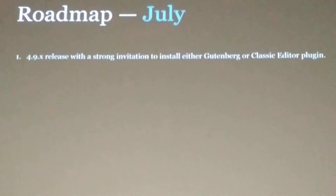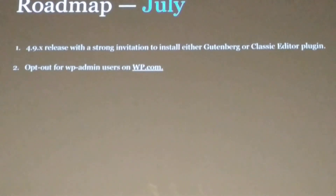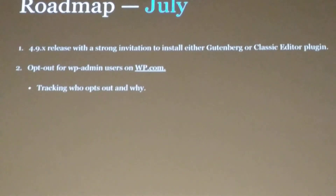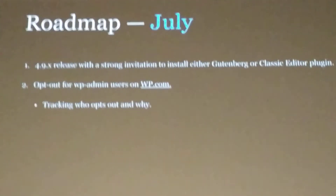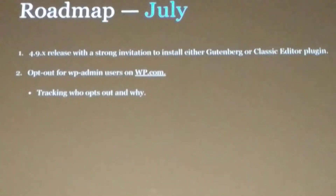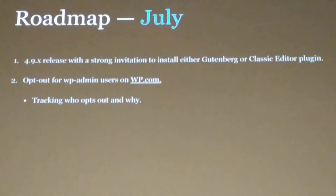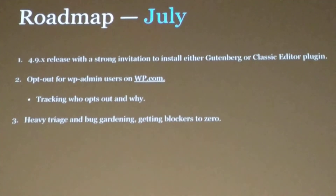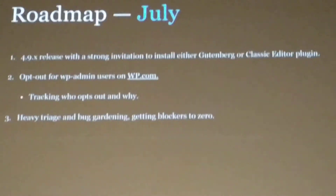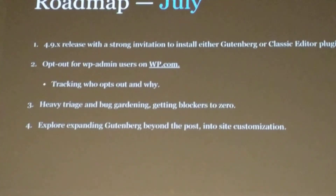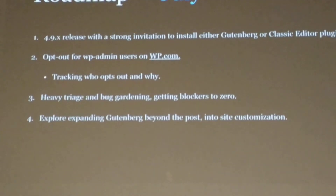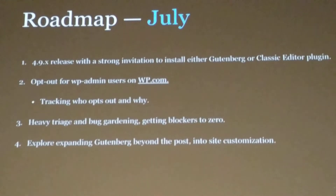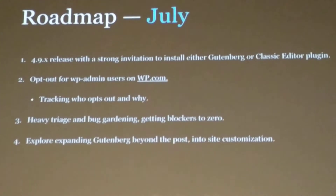We're going to be tracking the use of both of those. We're going to switch the wp-admin opt-in on WordPress.com to opt-out, and track who opts out to gather as much data as possible — especially from people using third-party plugins. Then there's heavy triage and bug-squashing, getting all blockers to zero. And we're going to kick off the customization work to start building what we want to launch this year: more of the full site editing experience in Gutenberg.